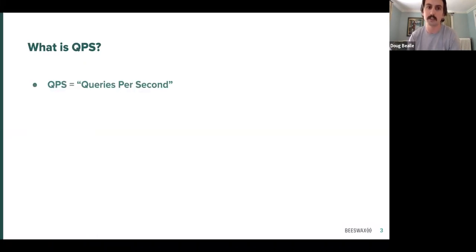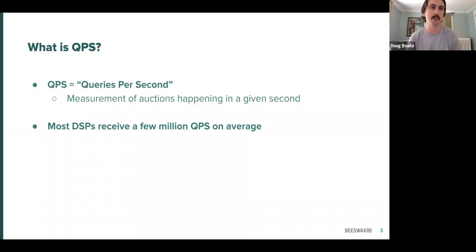QPS stands for queries per second. It's a measurement of the number of auctions or bid requests or impression opportunities that are happening in any given second, and most of the time that measurement is used to discuss how many auctions are coming into a DSP in any given second from the exchange partners. Most of the large DSPs, Beeswax included, listen to a couple million queries per second. At any given second, they have millions of impression opportunities or auctions coming into the DSP, and most other DSPs make all of that traffic available to all of their clients at the same time for all of them to bid on.